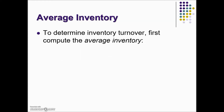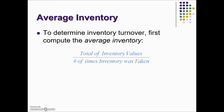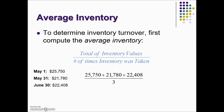To determine inventory turnover, we first need to compute the average inventory. Here we have the ratio: total of inventory values divided by the number of times inventory was taken. Here we have three different dates when the inventory was taken. To calculate the average inventory, we add those three values and divide by three — the number of times the inventory was taken. This gives us the average inventory.